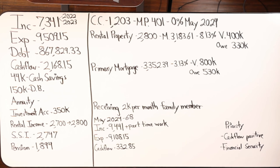When I say pension-like, what I mean is it's going to create an income for you that will pay you every month as long as you live — even if the account runs out of money, it's still going to continue to pay. You can do that with specific types of annuities, but not all annuities do that.